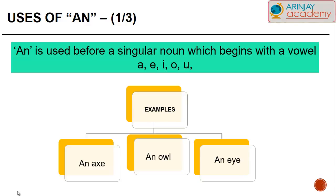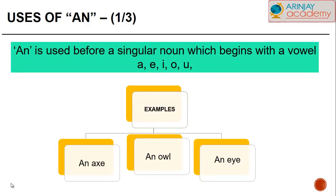Now we shall discuss the indefinite article AN. AN is used before a singular noun which begins with the vowel letter A-E-I-O-U.